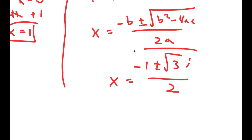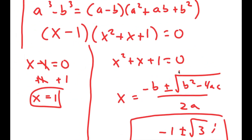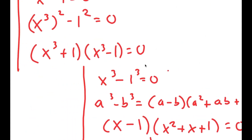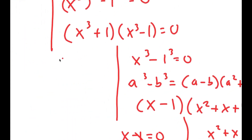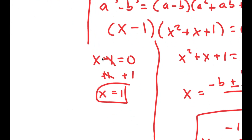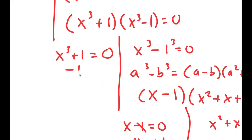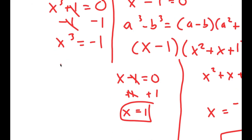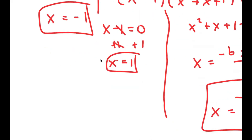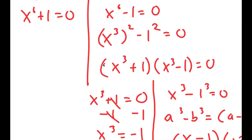So those are two more solutions, and we aren't done yet because we also have to solve the remaining equations. For x to the power of 3 plus 1 equals 0, I subtract 1 on both sides and get x to the power of 3 equals negative 1, meaning x is equal to negative 1. So this is another solution.